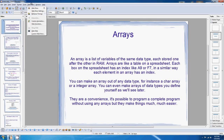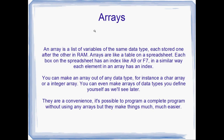G'day all, welcome to another tutorial. So today we're going to tackle arrays. Arrays are just another type of variable, or another way to use multiple variables — basically a list of the same variable over and over again, and each variable is stored one after the other in RAM. An array is like a table in a spreadsheet — you'll see in Microsoft Excel or OpenOffice Calc all the little boxes, and each box has an index, like A9 would be the ninth column of the A row, or F7 would be the seventh column of the F row.